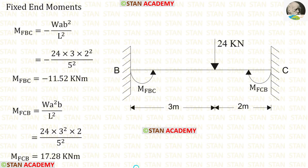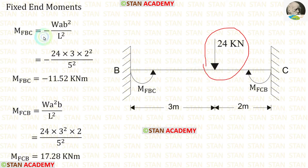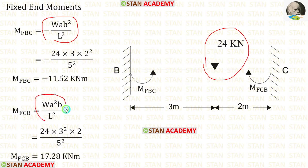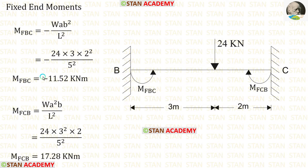Now let us find the fixed end moments in span BC. In span BC, we have an eccentric point load of 24 kN. The formulas to find the fixed end moments are −WAB²/L² and +WA²B/L². Applying the values, we obtain MFBC and MFCB.